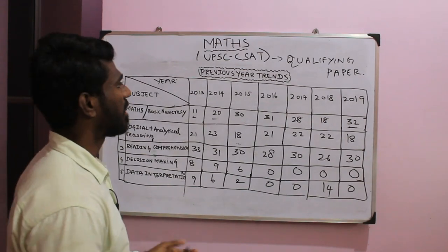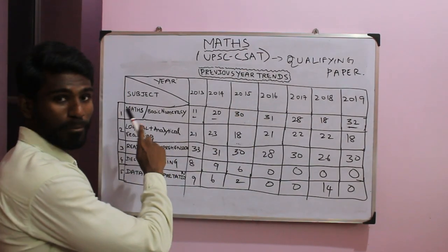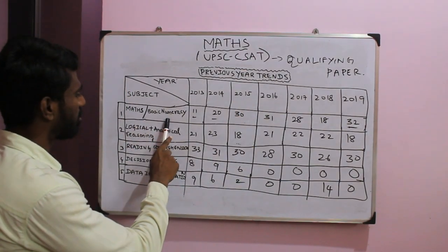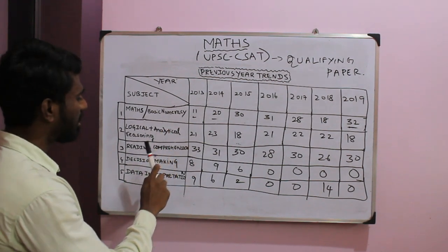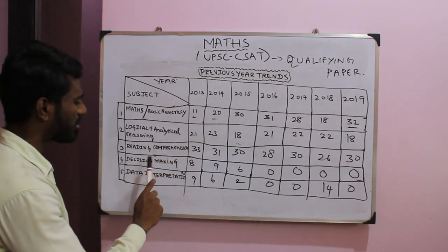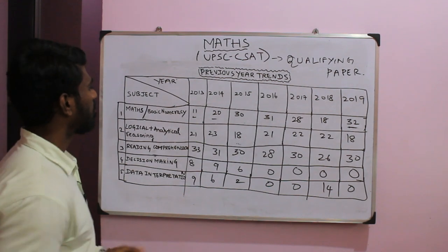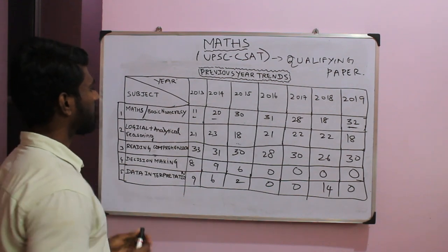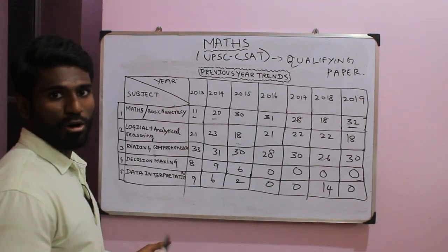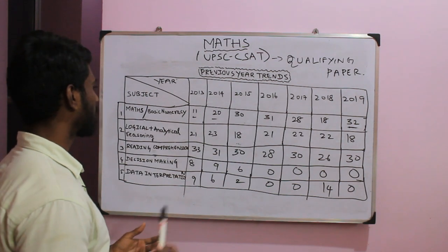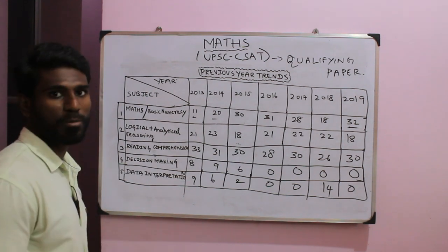Let's look at the subjects in C-SAT. You have math and basic numeracy, logical and analytical reasoning, reading comprehension, decision making, and data interpretation. In math, topics include ages, profit and loss, boats and streams, time and work, etc.